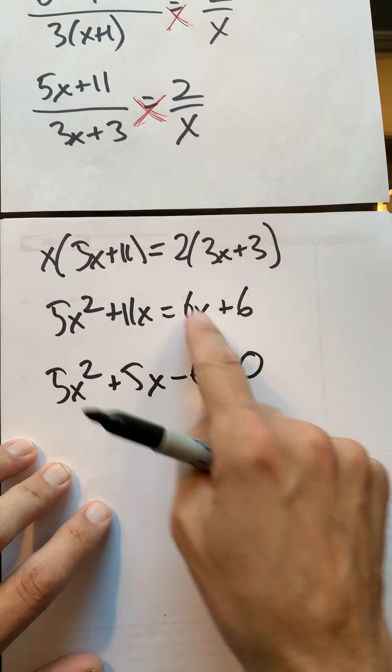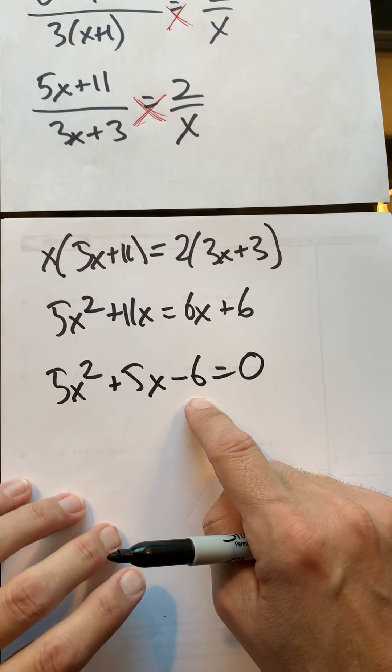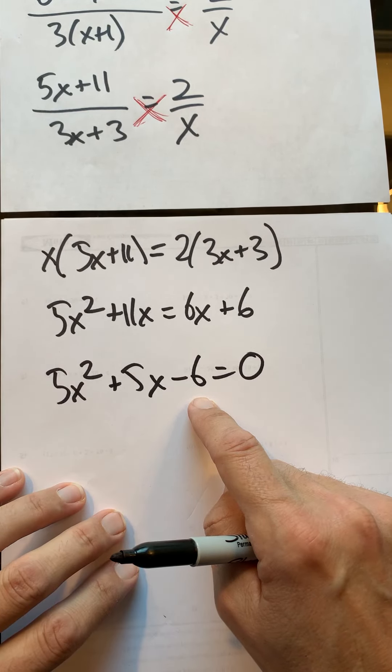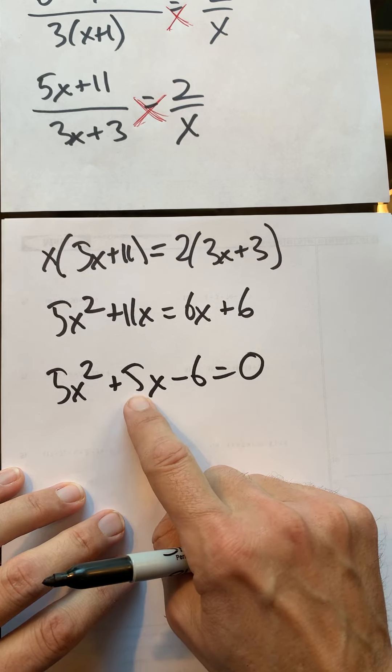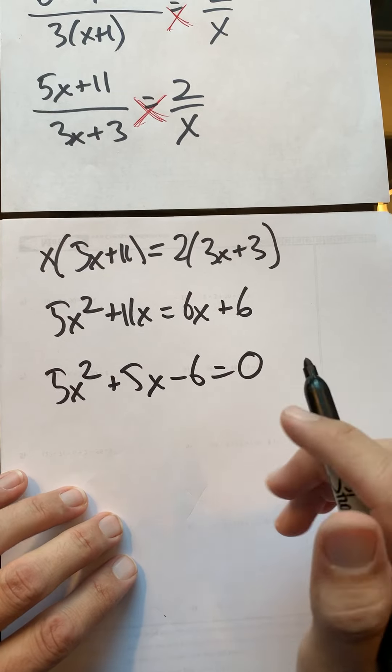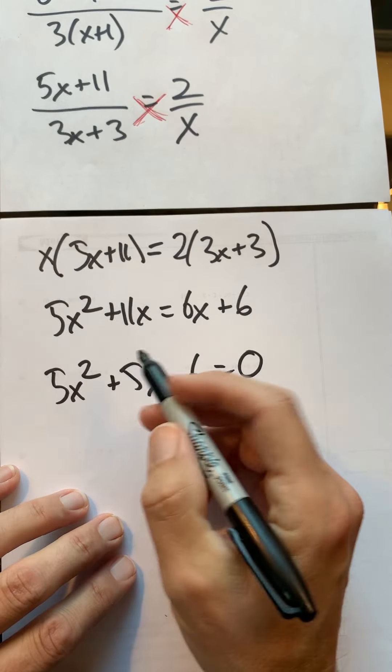I can try to factor this thing: two numbers that add to 5 and multiply to -30. So -30 is going to be 30 and 1, 15 and 2, 10 and 3, 6 and 5—it's not going to work factoring, so I'll kick into the quadratic formula.